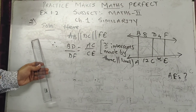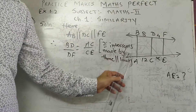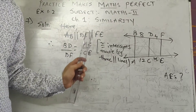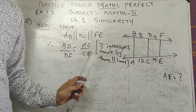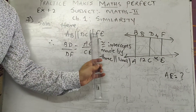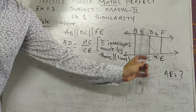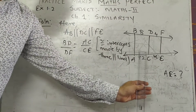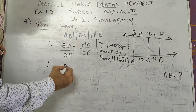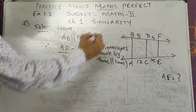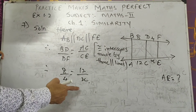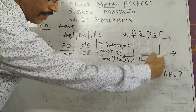Now come to sum number 7. The diagram shows three parallel lines: AB, DC, and EF. We use intercepts made by three parallel lines. Here AD is parallel to FE, and therefore DD upon DF is equal to AC upon CE. Putting values: DD is 8, DF is 4, AC is 12, CE is X. X equals 12 into 4 upon 8.